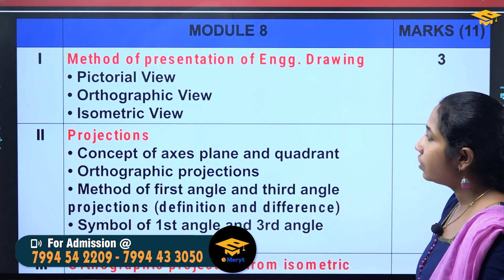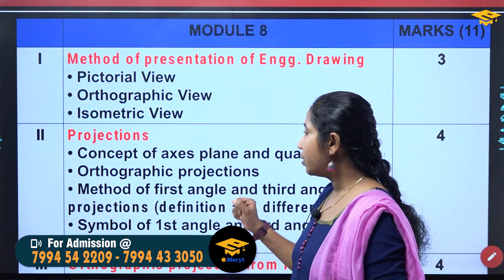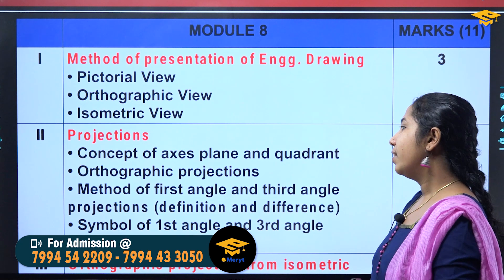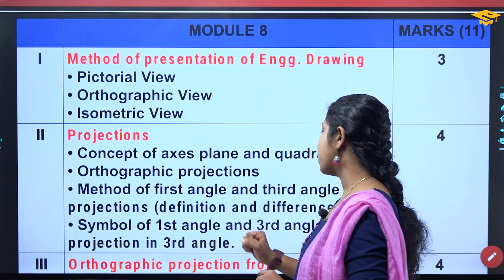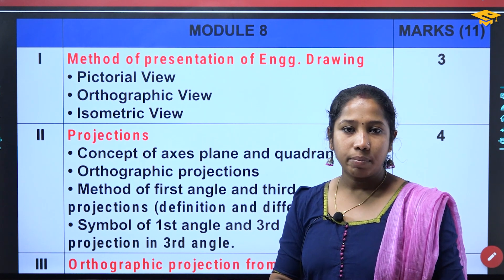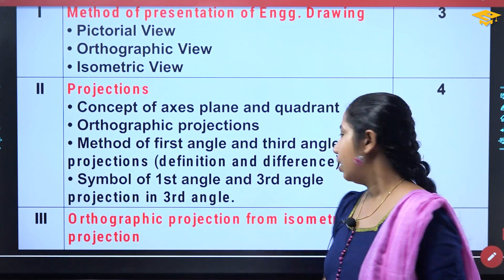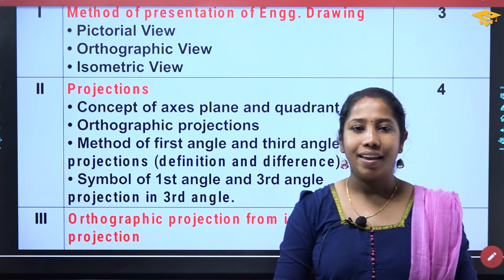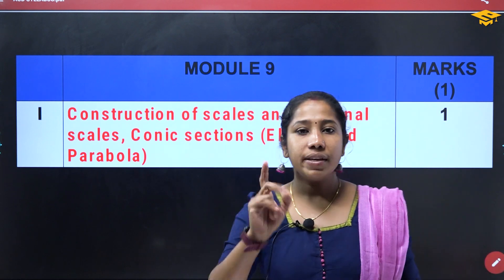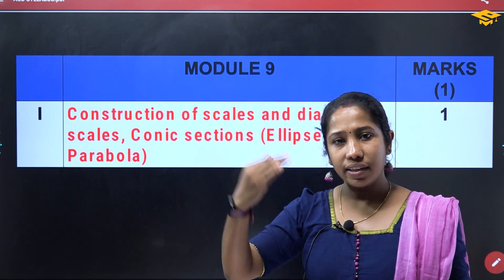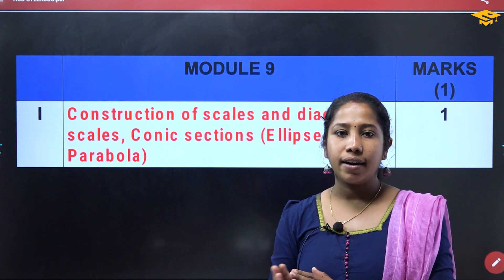The first chapter is Method of Presentation of Engineering Drawing — pictorial view, orthographic view, and isometric view. Then projections: concept of axes, planes and quadrants. Orthographic projections — 1st angle and 3rd angle projections, their definitions and differences. Symbol of 1st angle and 3rd angle projection. Orthographic projection from isometric projection. Also covered: nuts, bolt, screw thread and drawings — that's the part of machine drawing.